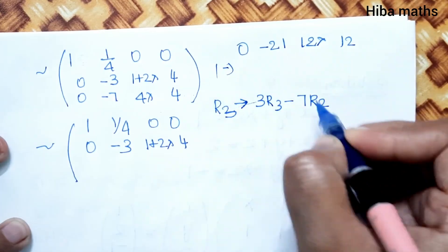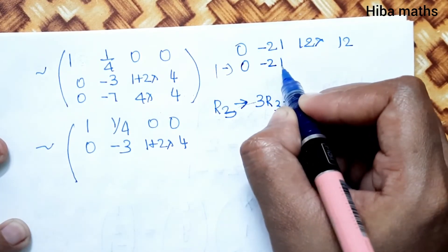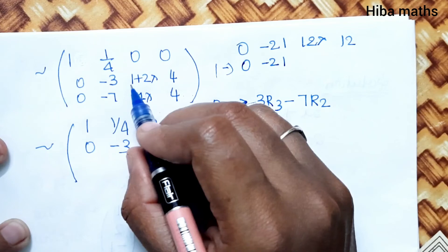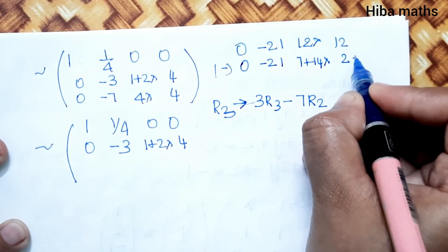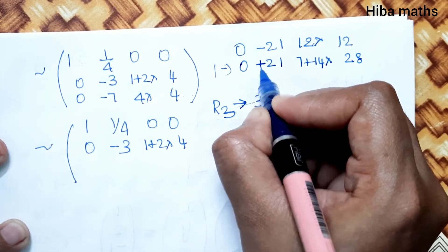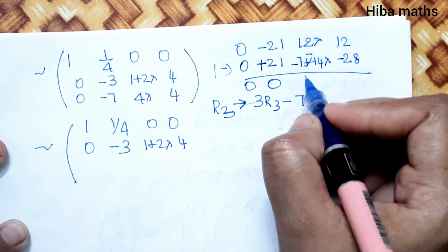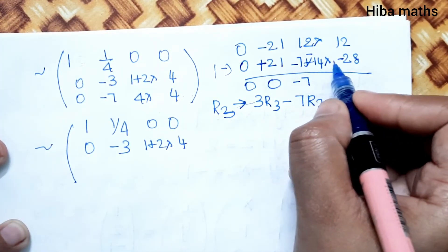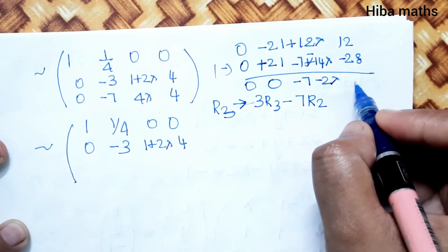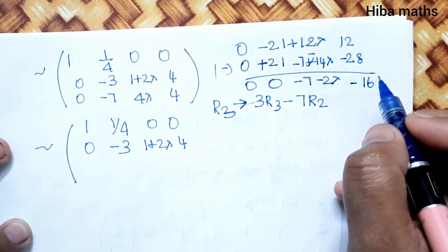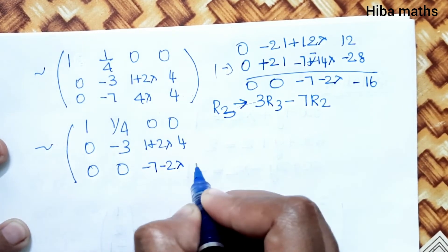After the operation 7×R2 minus 3×R3, the third row becomes: 0, 0, (14lambda minus 12lambda), (28 minus 12). This simplifies to [0, 0, minus 2lambda minus 7, 16]. The resulting augmented matrix in row echelon form has last row [0, 0, -7 - 2lambda, 16].